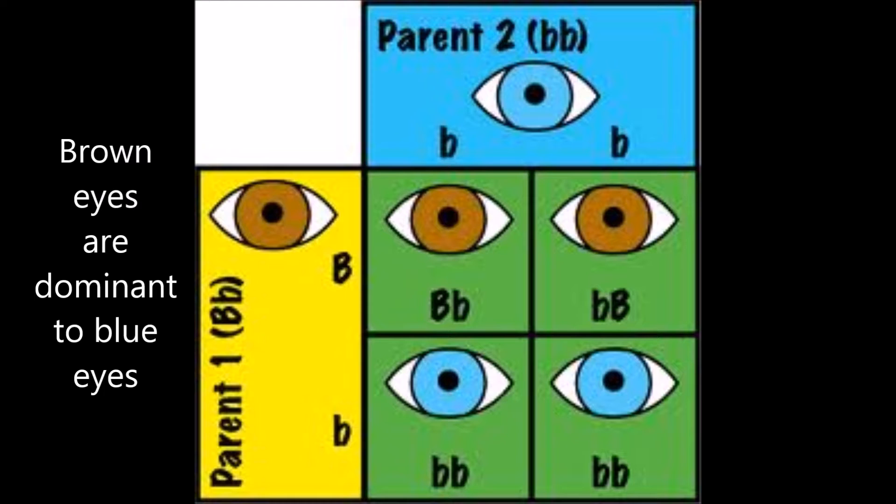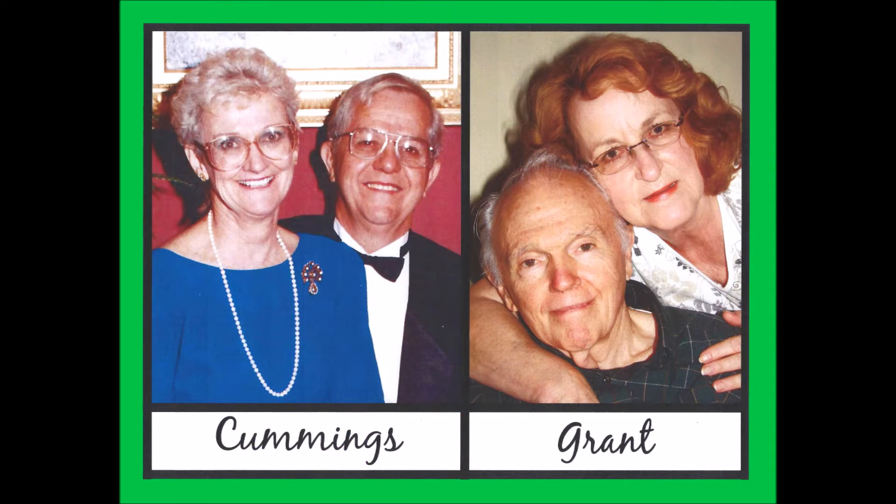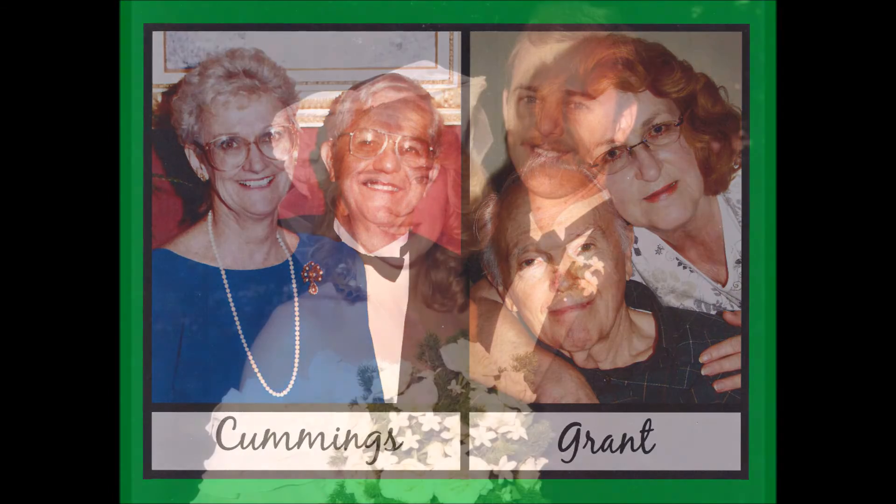Some examples. If mom has two genes for curly, and pop has two genes for straight, that means you'll inherit a gene of each kind, but the curly will dominate.